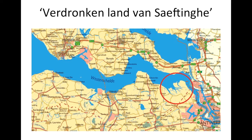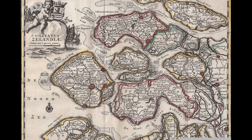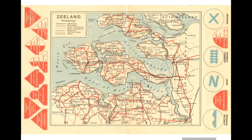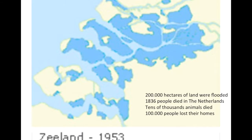This map shows Antwerp and the Scheldt flowing into the sea. The estuary system is visible here. In the old maps we saw, the estuaries were connected — this is the Westerscheldt, and this is the Oosterscheldt, which has slowly silted up. Over here the Rhine, Meuse, and other rivers flow out into the North Sea as well. We are used to thinking of the Netherlands as a delta, but you could make a good case that these are, in fact, estuaries of the Scheldt.